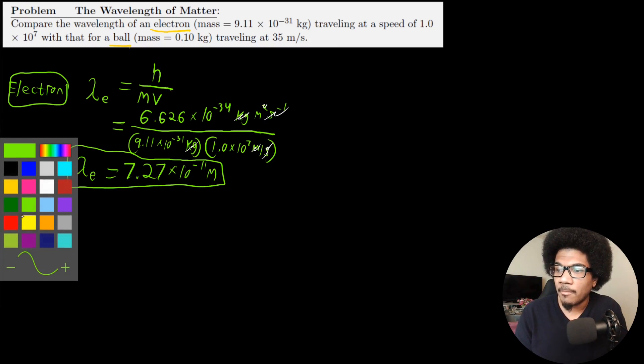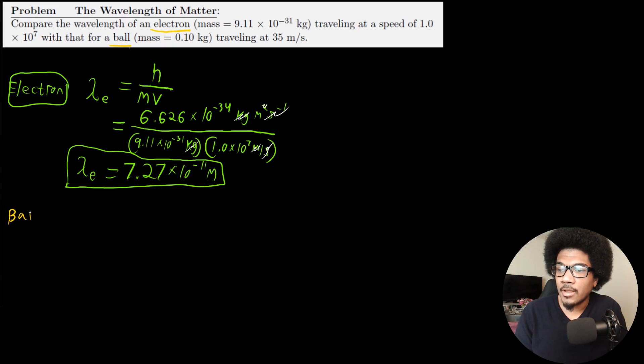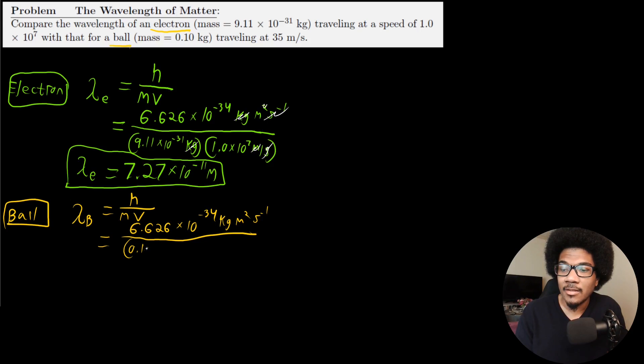Now, let's look at what we get for the ball. So if we're calculating for the ball, I'm going to use λ_b for the ball. Same equation though, h/mv. So now again, we use Planck's constant 6.626×10^-34 kilograms meters squared per second. The mass of this ball is 0.1 kilograms. And the speed that it's traveling at is 35 meters per second. Again, all your units cancel out to leave you with meters. So the wavelength of the ball is going to be 1.9×10^-34 meters.